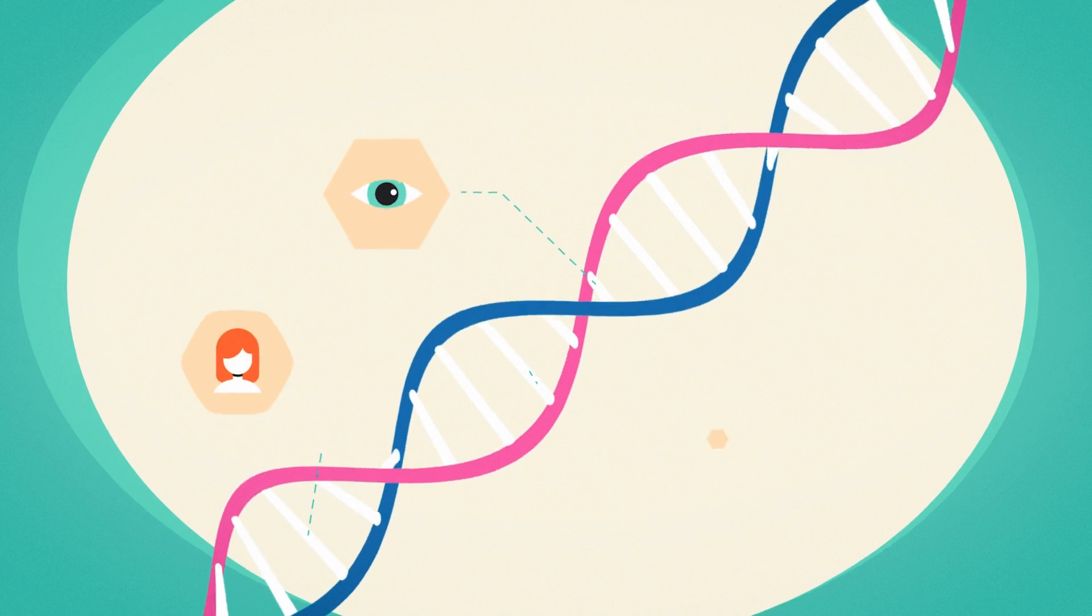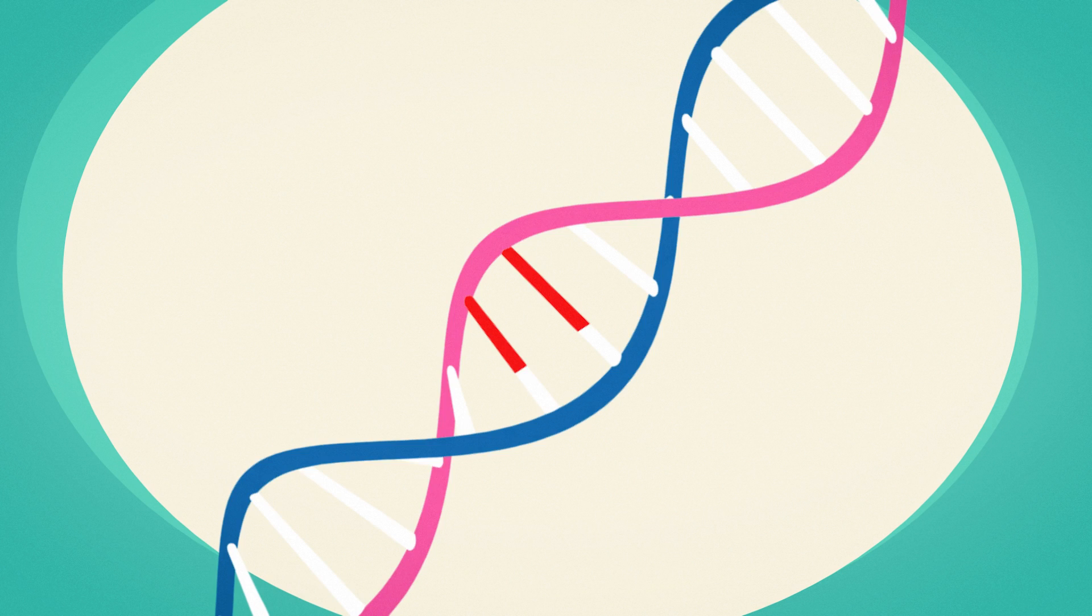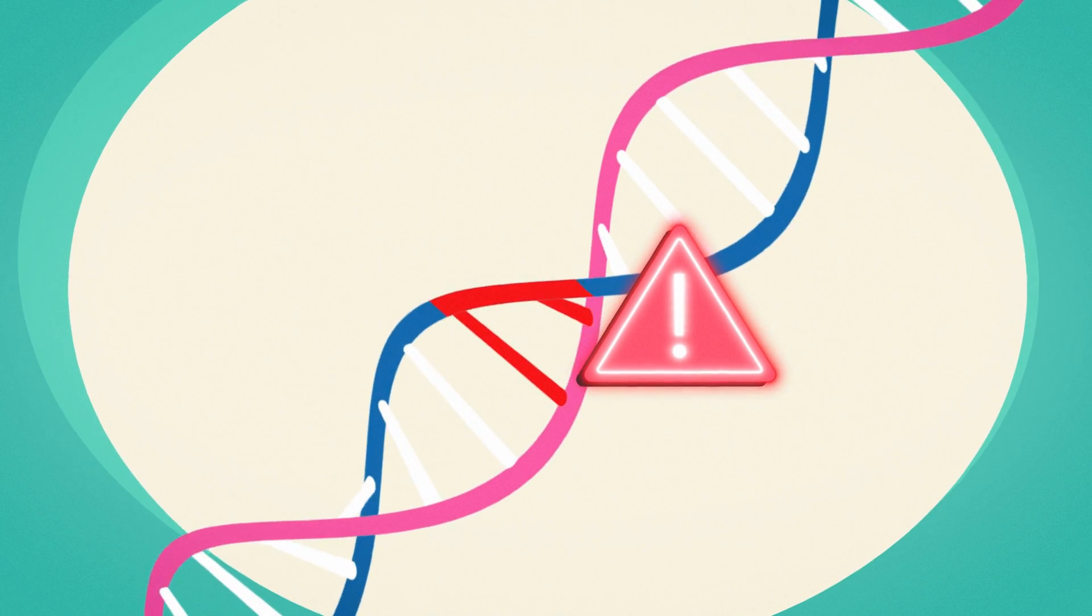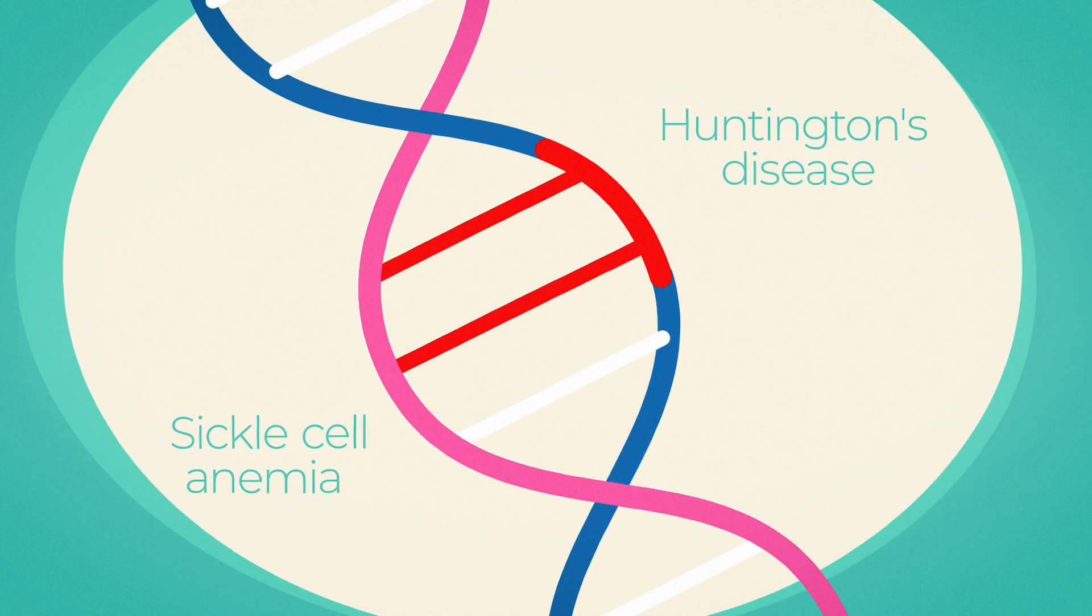Genes determine things like your hair and eye colors and your height. But sometimes genes contain flawed instructions, and these varieties are harmful. These mutated genes cause diseases like Huntington's or sickle cell anemia.